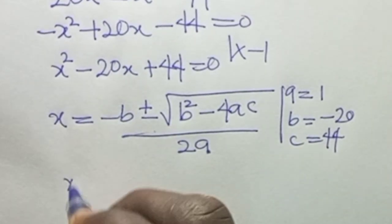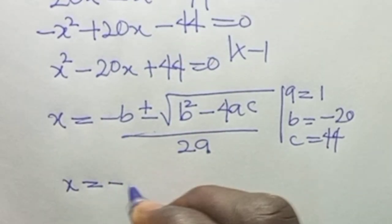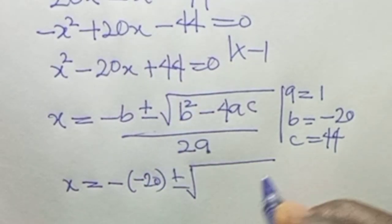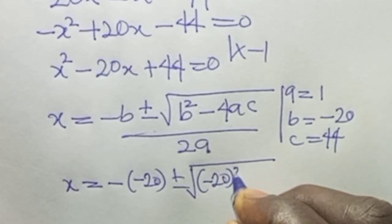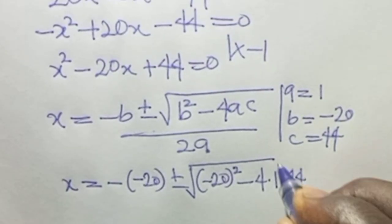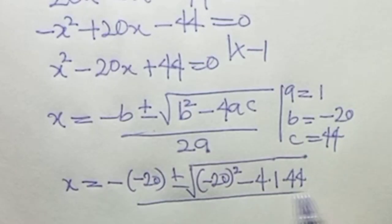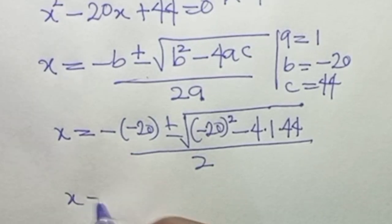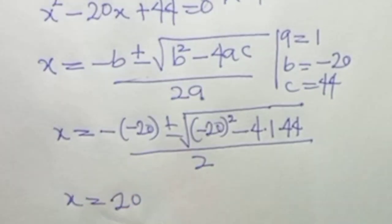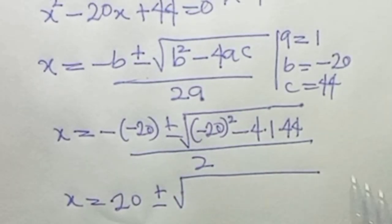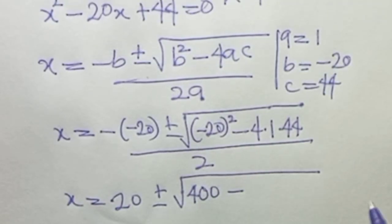Substituting our values: s equals minus (minus 20) plus or minus square root of (minus 20) squared minus 4 times 1 times 44, all over 2. So s equals 20 plus or minus square root of 400 minus 176, all over 2.